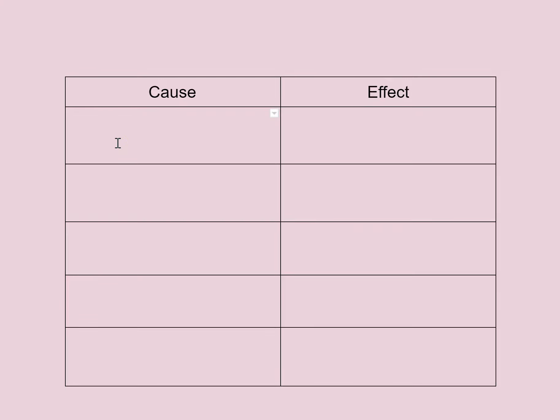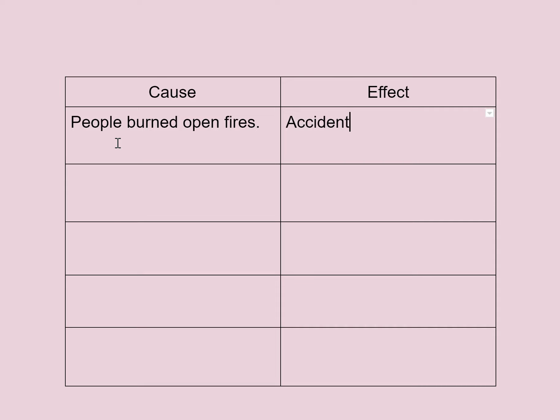In this video I'm going over the cause and effect chart for the Great London Fire. At the very beginning we learn that people burned open fires — they used fire for everything. And because people burned open fires, accidental fires were common and happened fairly often.